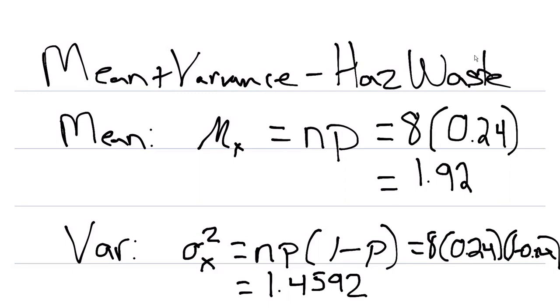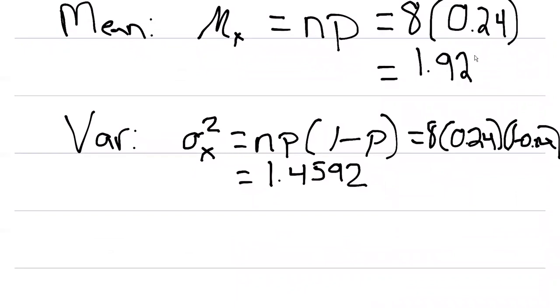Now again, remember that's the variance. We might also be interested in what the standard deviation is. And so we can say sigma of x equals the square root of 1.4592. And that's gonna equal 1.2079.